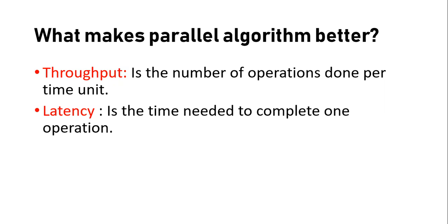What makes a parallel algorithm better? One is its throughput and one is its latency. Throughput is the number of operations per unit time — the amount of operations you perform in one unit time. Latency is the time needed to complete one operation — the time required to execute the operation you are performing.